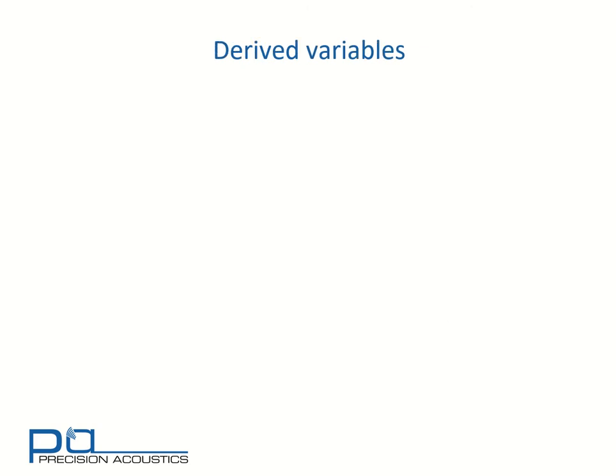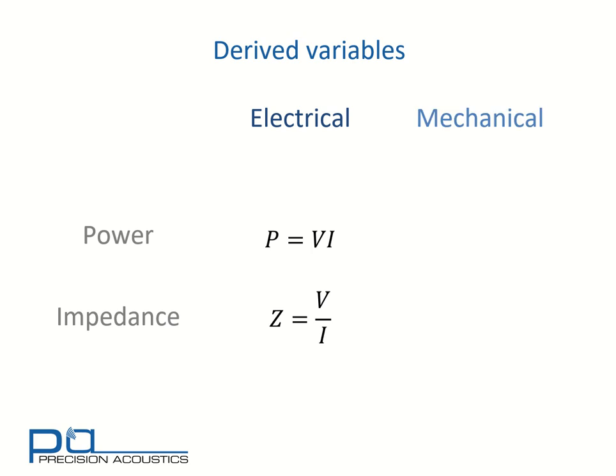There are similar analogies with derived variables. Consider here power and impedance. In the electrical scenario, power is the product of voltage and current. And the impedance is the ratio of the two. Mechanically, the same relationship exists. So power is the source of force multiplied by the source of flow, and the mechanical impedance is their ratio.